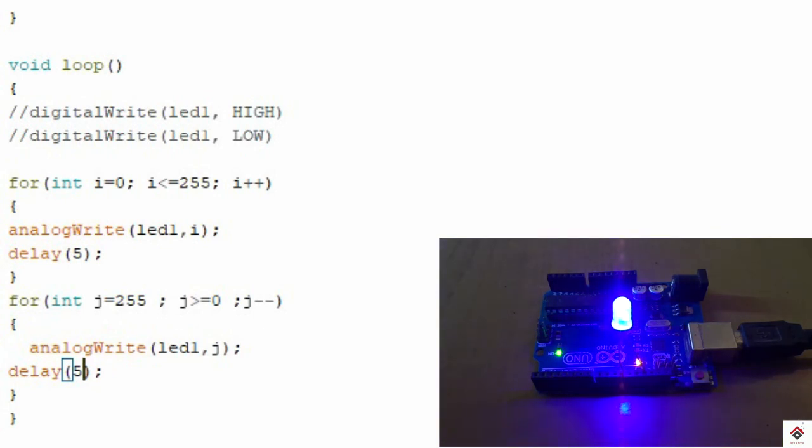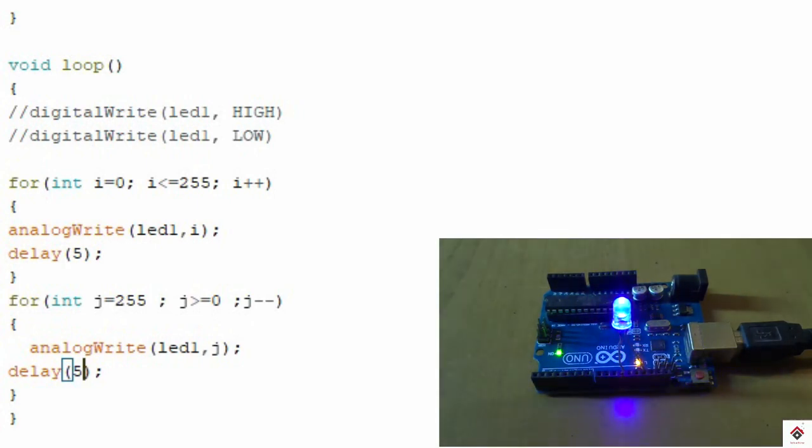So this is all about the LED fading program which many of the beginners will feel difficult initially. So I hope after watching this video you will get clear with the concept and you can understand easily. So this concept we can also use it to control the speed of the DC motor which will be coming up in the next video.